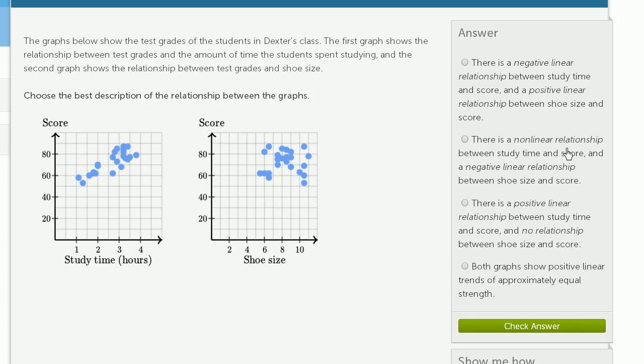There is a nonlinear relationship between study time and score, and a negative linear relationship between shoe size and score. Well that doesn't seem right either. A nonlinear relationship, it would not be easy to fit a line to it. And this one seems like a line would be very reasonable.